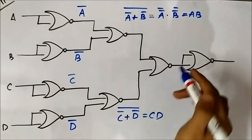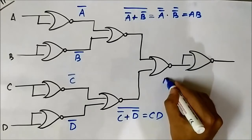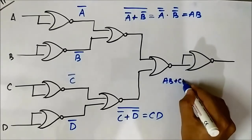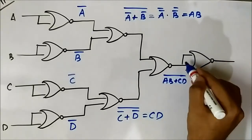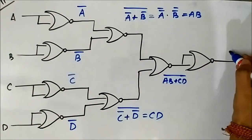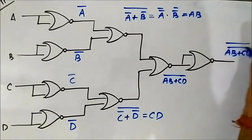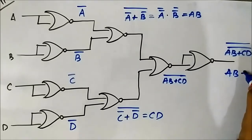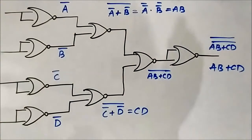The two inputs to the next NOR gate are A·B and C·D, so the output becomes (A·B + C·D) whole complement. This is then passed through a final NOR gate with the same input, behaving as an inverter, giving (A·B + C·D) double complement, which equals A·B + C·D. This is the final output of the logic circuit consisting of only NOR universal gates.